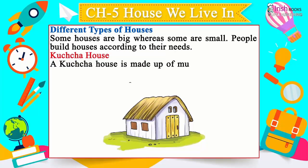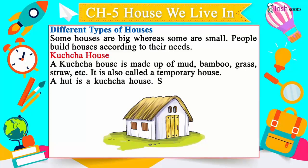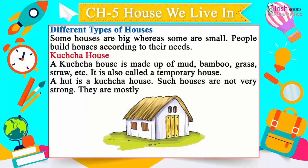A kaccha house is made up of mud, bamboo, grass, straw, etc. It is also called a temporary house. A hut is a kaccha house. Such houses are not very strong.